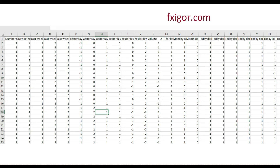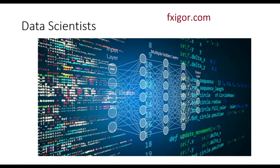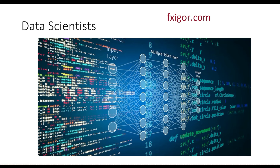That data is very important. Our data scientists will develop classification models to find which features bring better accuracy, using winning trades as one and losing trades as zero. They will use machine learning methods to determine which methods and features are the best. Then they will create regression models to see which features bring bigger profit, and symbolic regression to build a robust model and avoid overfitting.